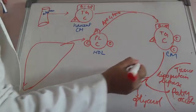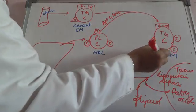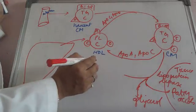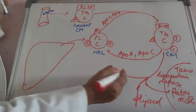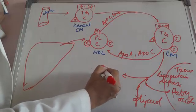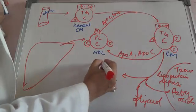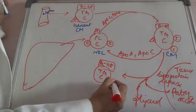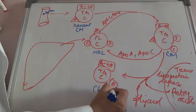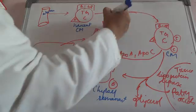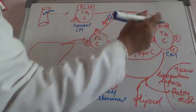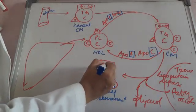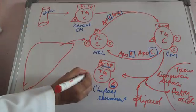After lipoprotein lipase action, ApoC and ApoA are given back to HDL. The chylomicron is now remaining with some triglycerides, cholesterol, ApoB48, and ApoE — this is called the chylomicron remnant. The point to note is: ApoC and ApoE were taken from HDL, but ApoA and ApoC are returned to HDL, so the chylomicron remnant retains ApoE and ApoB48.